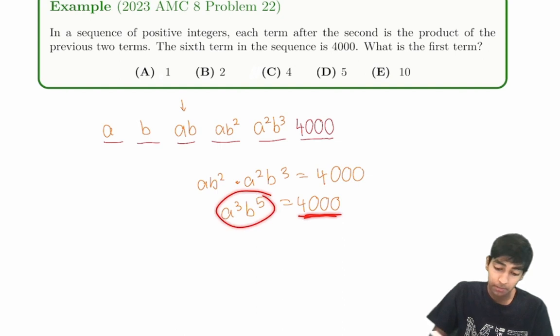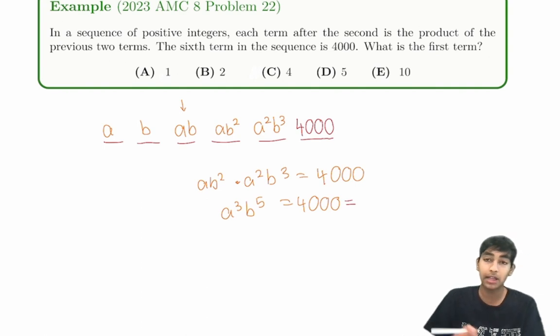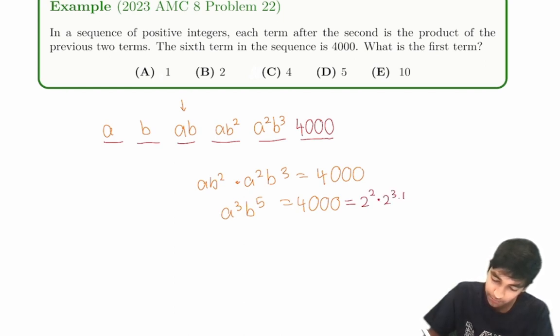They must have, this whole thing must divide 4,000. So to do this, let's explore the prime factorization of 4,000. Maybe that will give us a hint on what A and B have to be. So 4,000 is 2 squared, 4, times 1,000, which is 2 cubed, 5 cubed, which is 2 to the 5 times 5 cubed.